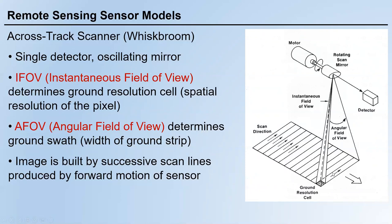Many lines perpendicular to the direction of movement are created on the ground, and the information is collected line by line. At a specific time, there is an IFOV — instantaneous field of view — on the ground, which determines the ground resolution cell. At a specific time, the detector can collect information from a small cell on the ground, and the size of this cell determines the spatial resolution of the sensor.